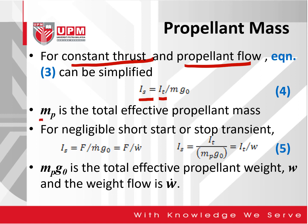The M_P in equation 4 is the total effective propellant mass. Depending on the type of propellant, M_P is generally the total effective propellant mass. For negligible start and stop transients, equation 4 can be rewritten as equation 5.